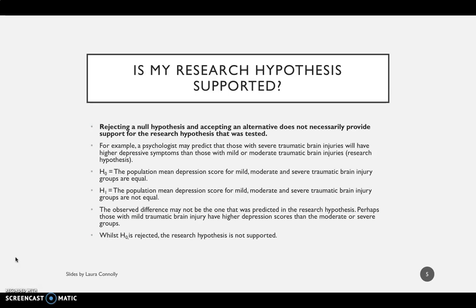So you can see here that we've got three distinct groups: those with a mild TBI, those with moderate, and those with a severe TBI. Our outcome variable — our dependent variable — which is what we're trying to measure, is depressive symptoms. A null hypothesis might be that the population mean depression score for mild, moderate, and severe TBI groups are equal, so we predict no difference in the depression scores of the three groups. Our alternative hypothesis, however, says that the population mean depression score for mild, moderate, and severe TBI groups are not equal — so we're predicting there to be a difference somewhere between these three groups in terms of the depression score.